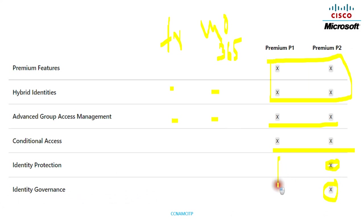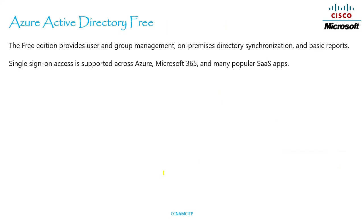Identity Governance is supported by Premium 2 only — not by Premium 1, Microsoft 365, or the Free edition. These are the features you should know to help you purchase according to your business requirements. Looking at the full comparison, Premium 2 includes each and every feature we have discussed.